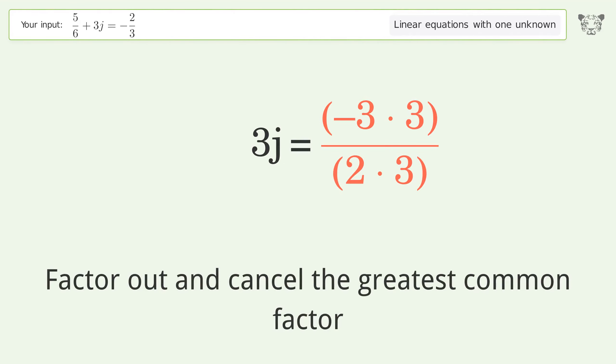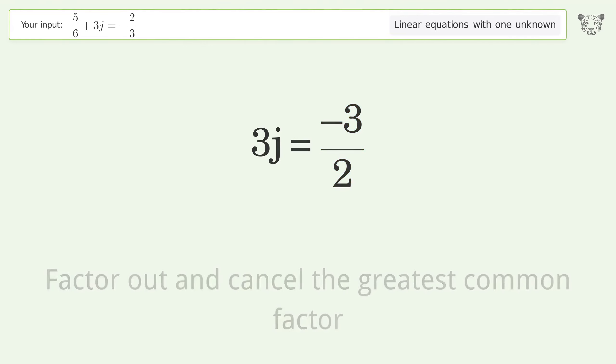Factor out and cancel the greatest common factor. Isolate the j. Divide both sides by three.